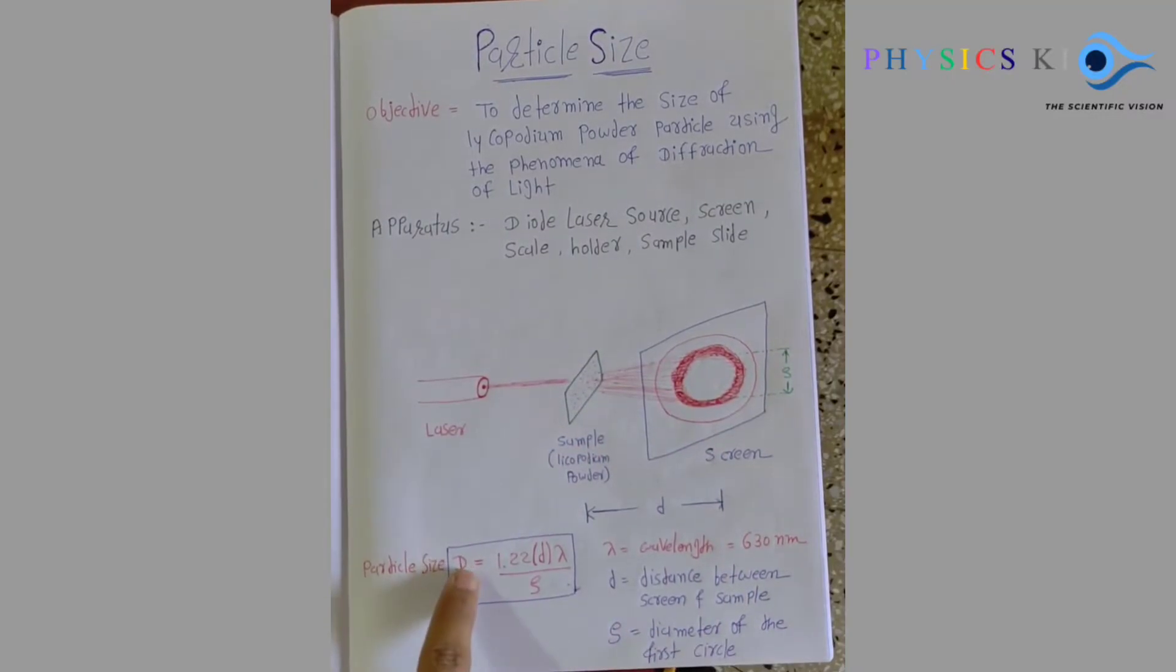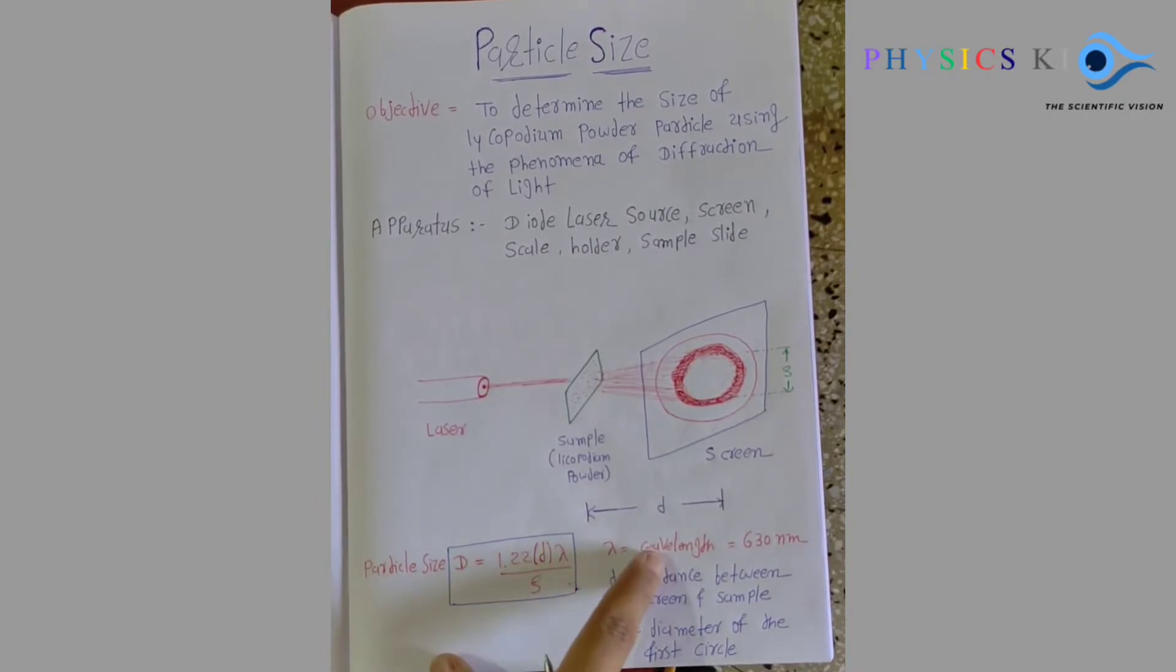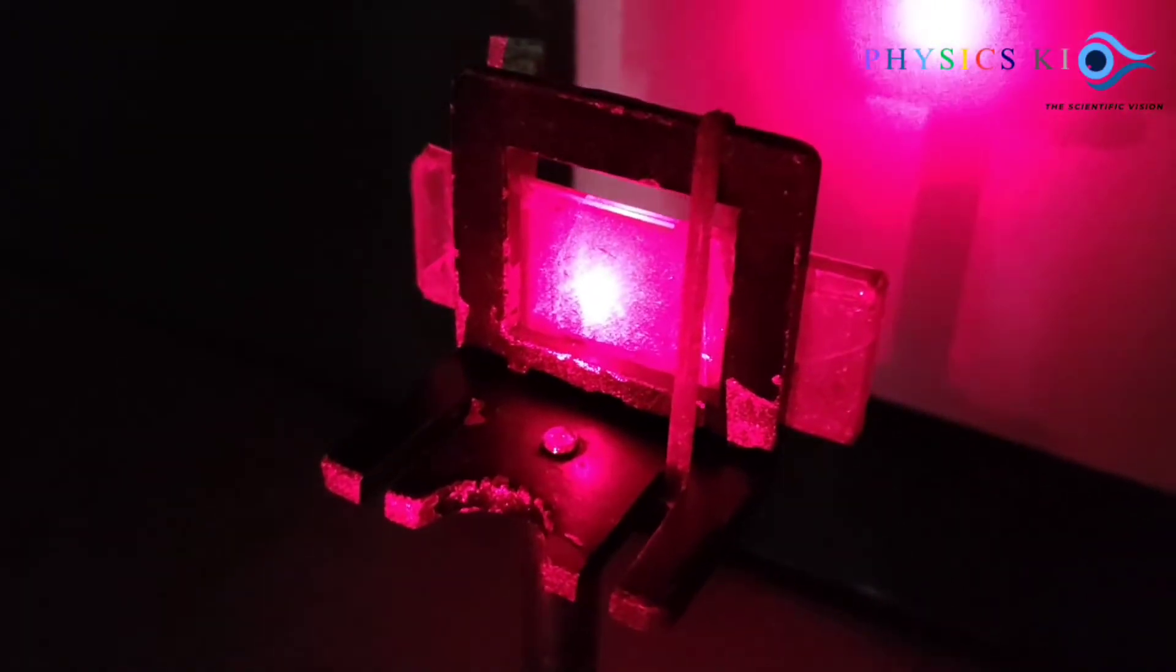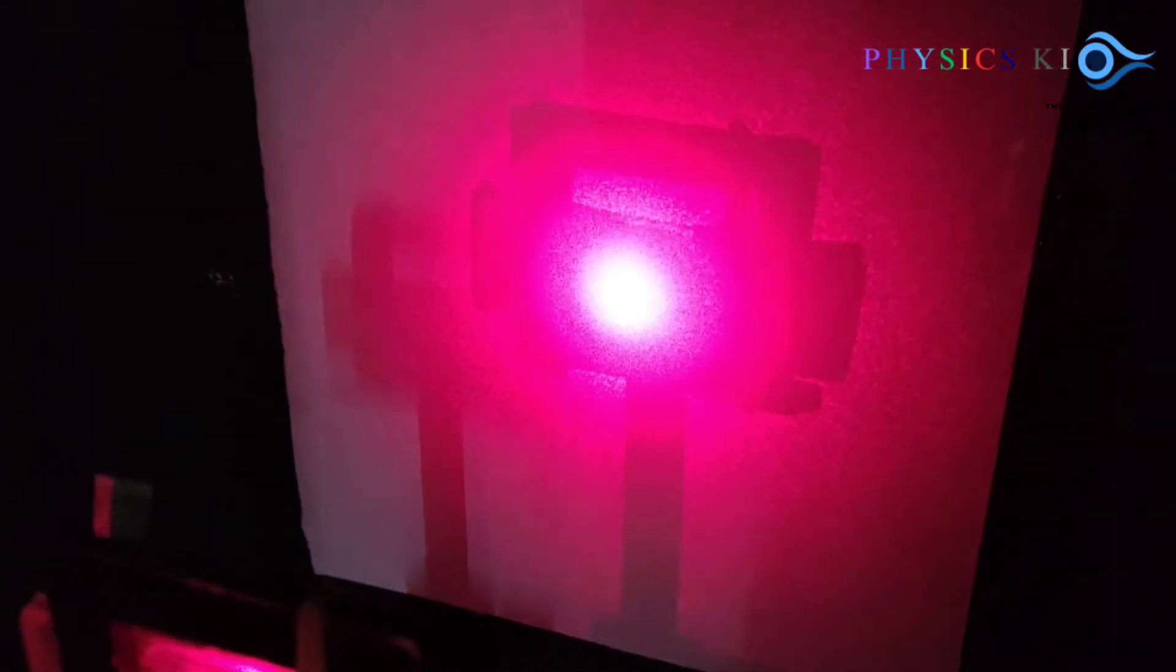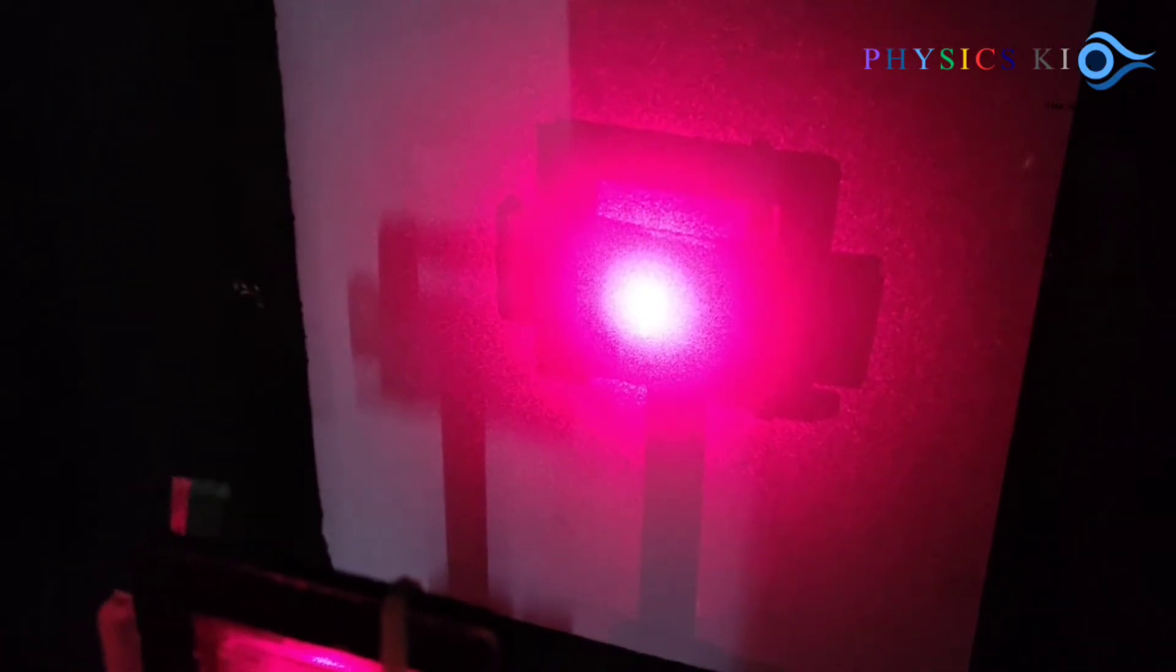Which I am representing small rho. This one is the equation from the diffraction: d is equal to 1.22 times lambda times d divided by rho. So this one is my setup - I am using the diode laser bombarding on the sample, and this one is our screen pattern.